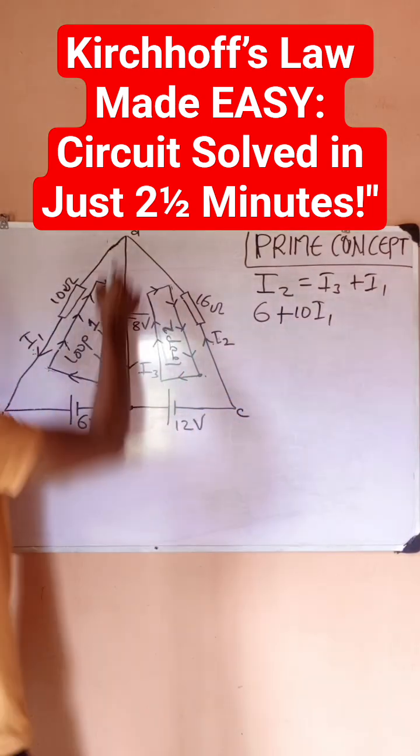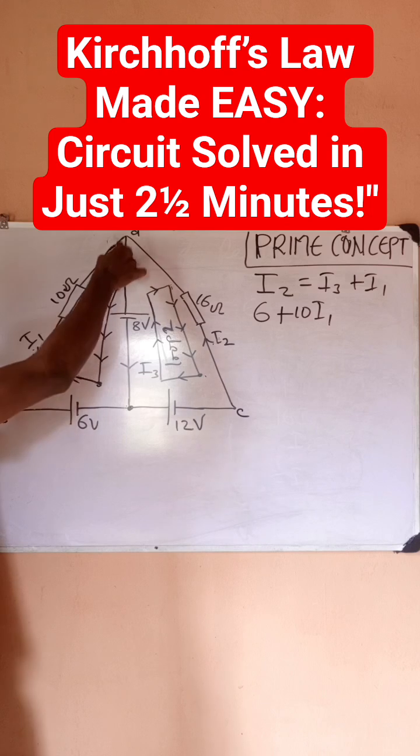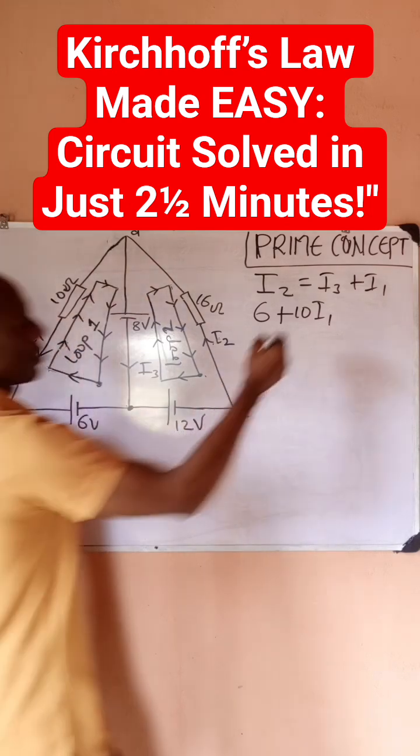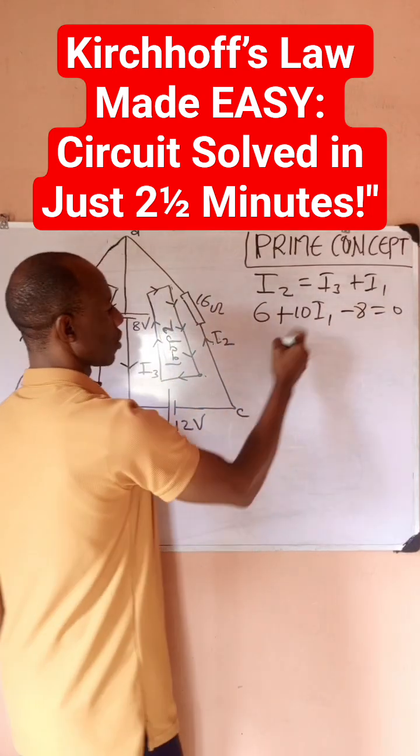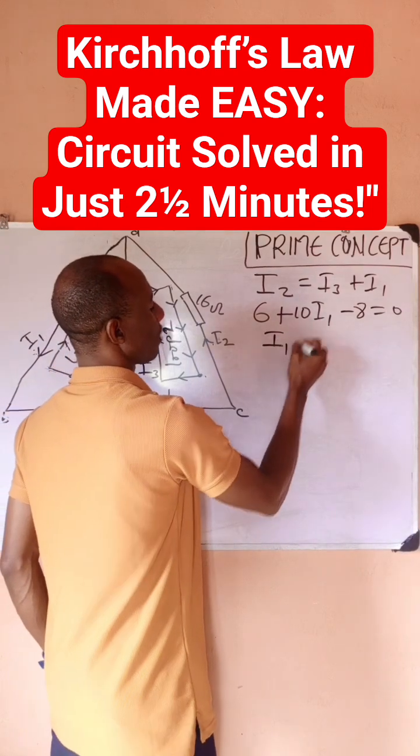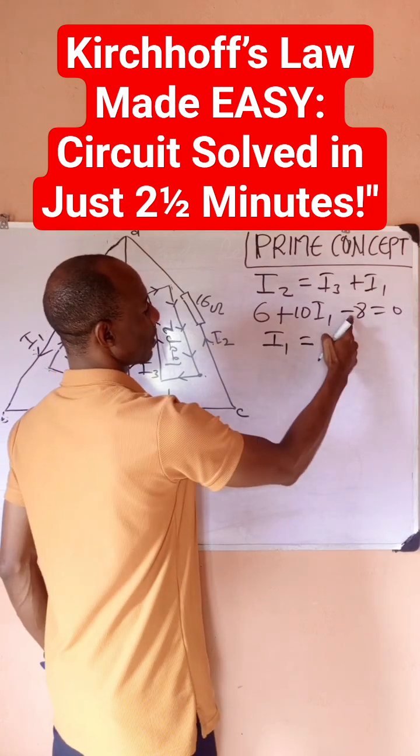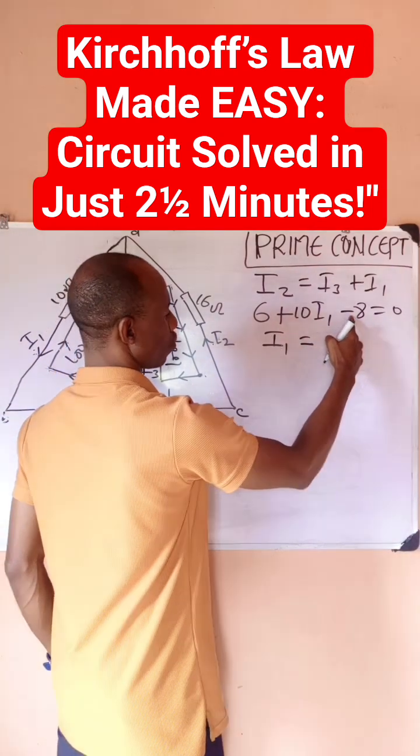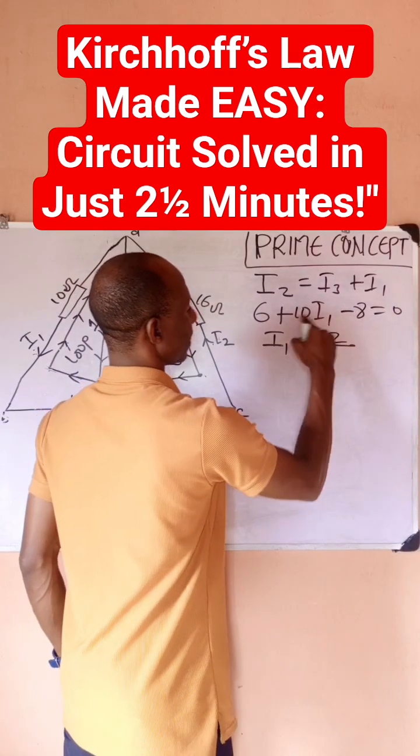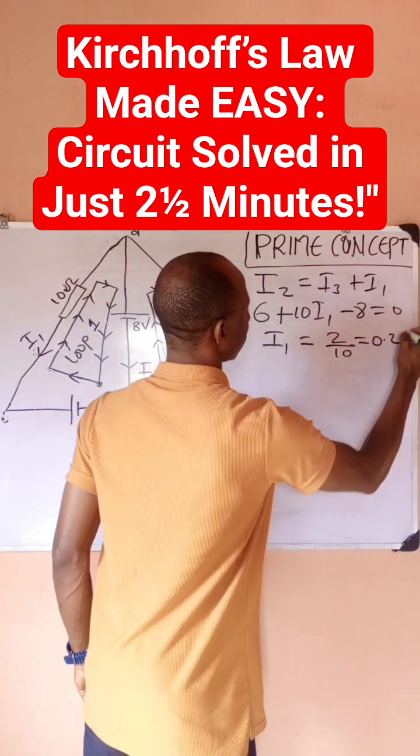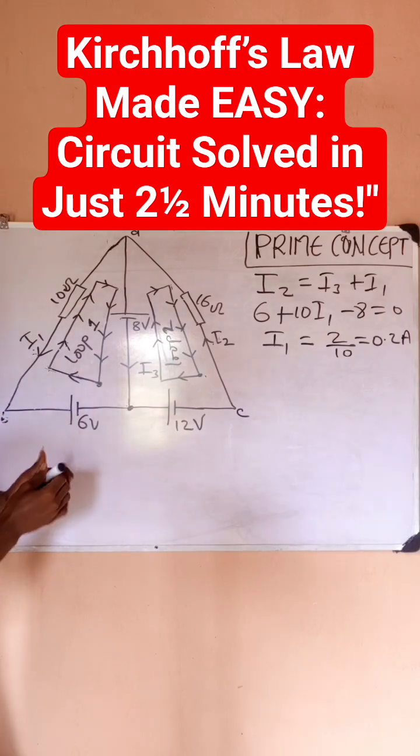So minus 8 equals 0. If I solve, I would find that I1 is going to be 6 minus 8, which is minus 2. So if I cross it, it becomes 2 divided by 10, which is 0.2 amperes.